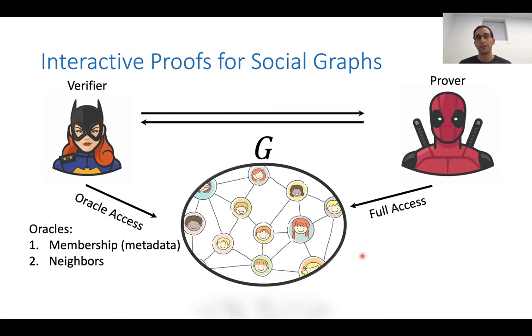So here we're going to communicate with the prover. And we're going to use this Oracle access to the graph. But again, we're not going to trust the prover. So we're going to use his help and computational power, but we're not going to trust him.